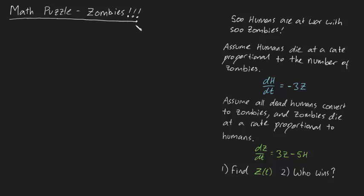G'day guys, welcome back. In this video I've got a fairly new and fairly weird type of math puzzle for you. 500 humans are at war with 500 zombies, and in this war we're going to assume the following: humans die at a rate proportional to the number of zombies, so dH/dt is equal to minus 3Z, where Z is the amount of zombies at any instant and H is the amount of humans at that same instant. Also assume all dead humans convert to zombies, and zombies die at a rate proportional to humans, so dZ/dt is equal to 3Z minus 5H. The question is: find Z as a function of t, and who wins the war?